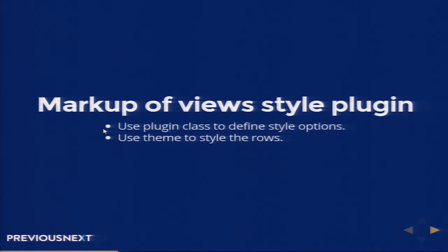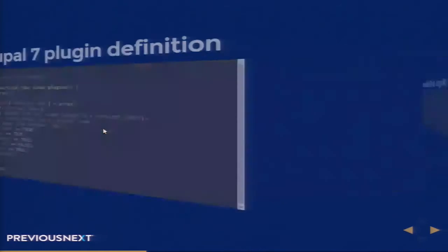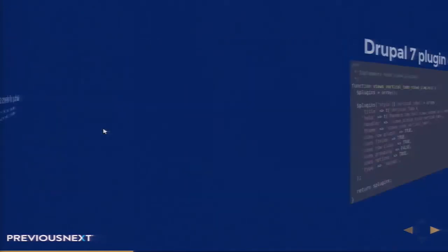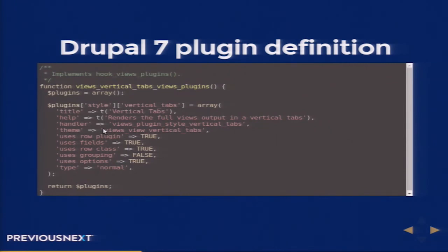Every query is fetching a lot of data from your database. This data chunk can be called a row, and it is the duty of the style plugin to theme that row in a proper format. If you are building a style plugin, make sure you are using a proper row plugin for styling your data. If you are not using a proper row plugin, you can break things for themers who want to override their row theme function or change the markup.